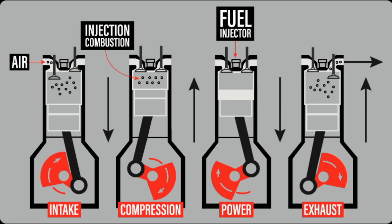We often talk about the power output when it comes to internal combustion engines. From over a century, various research has been conducted to study and modify the factors affecting the power output of an IC engine. The configuration of the engine, like CC, is decided after this research. Now let's ponder: are there any effects of cylinder size on the engine's power output? What effects do engine configurations like cubic capacity have on the engine's output?